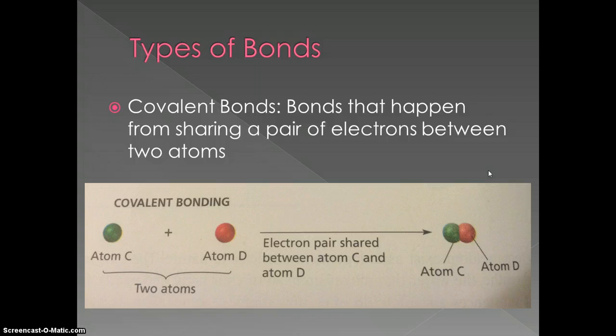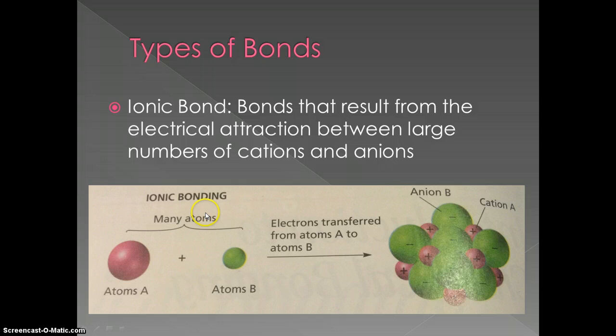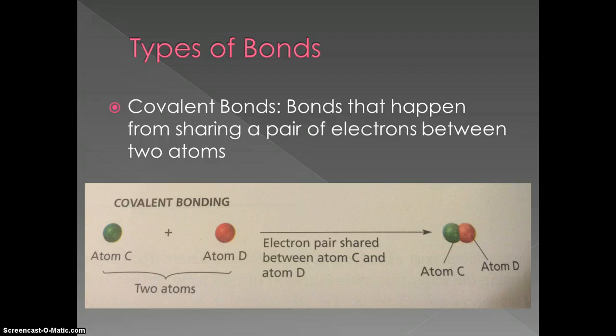Another type of chemical bond is the covalent bond. These are bonds that result from sharing a pair of electrons between two atoms. With ionic bonds, one atom took the electrons and one received them, staying together to neutralize the charges. With covalent bonds, it's a sharing — the two atoms didn't give up any of their electrons, but they're sharing a pair of electrons.